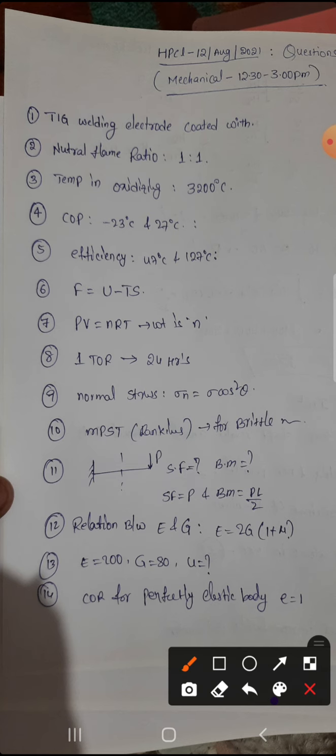One more question about natural flame. What is the ratio between oxygen and acetylene? One is to one. Temperature in oxidizing flame they are asking, that is 3200.